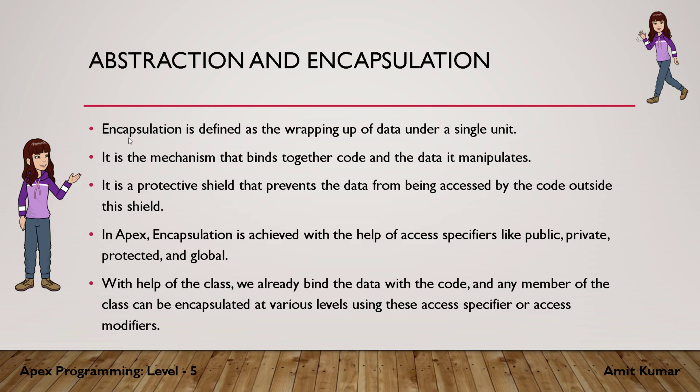So encapsulation is wrapping up of data and code as a single unit, which we have already done as a class. We have also seen that a class has various members inside it. Now with the help of access modifiers, we can enhance the accessibility of these members. The four access modifier keywords are public, private, protected and global.